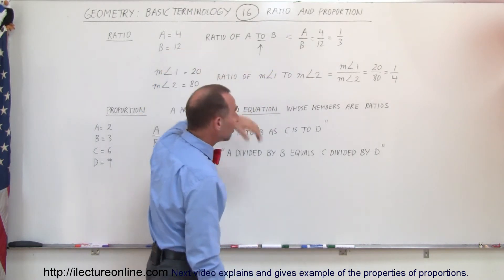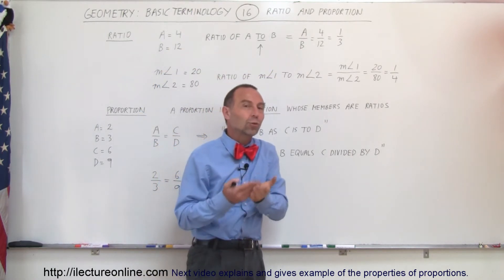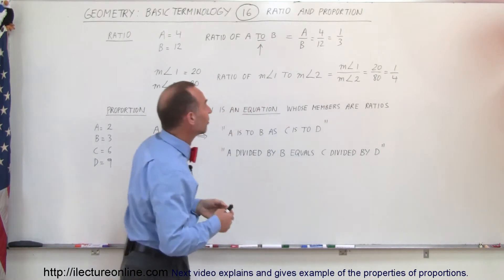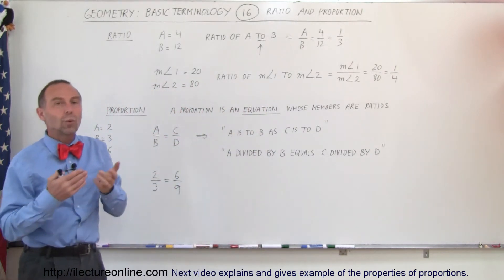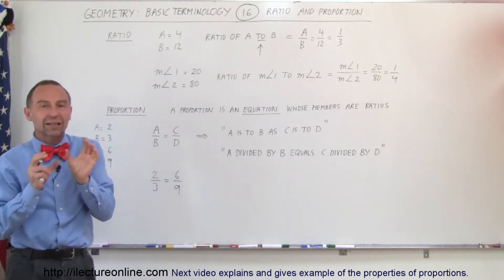which in this case is 4 divided by 12. And of course, when we simplify that, that's 1 to 3, which means the value of A is 1 third the value of B. That's the ratio.